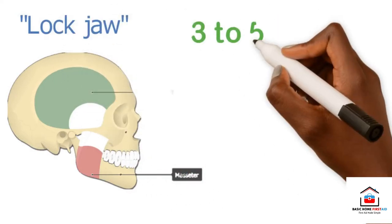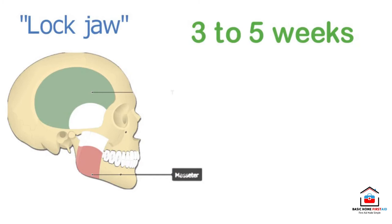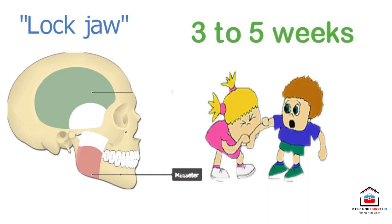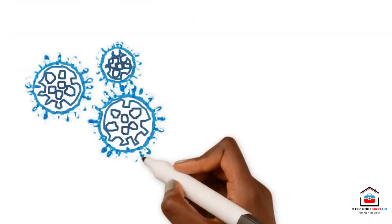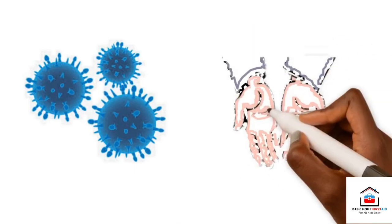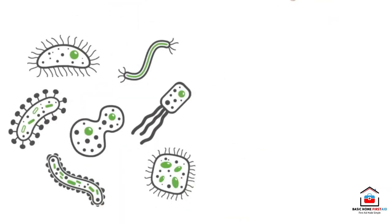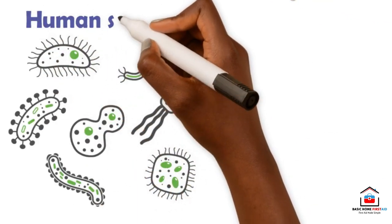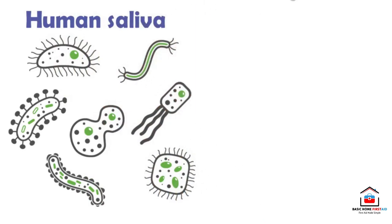Human bites differ from other bites in that they may be more contaminated, tend to occur in higher risk areas of the body especially the hand, and often receive delayed care. At least 42 different species of bacteria have been reported in human saliva, so it is not surprising that serious infections often follow human bites.